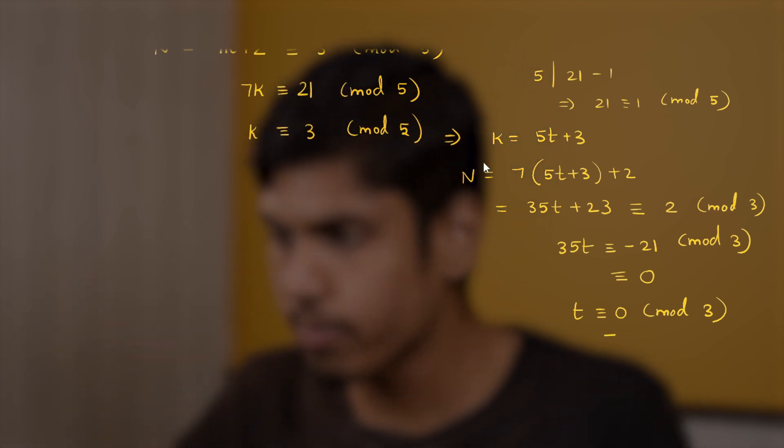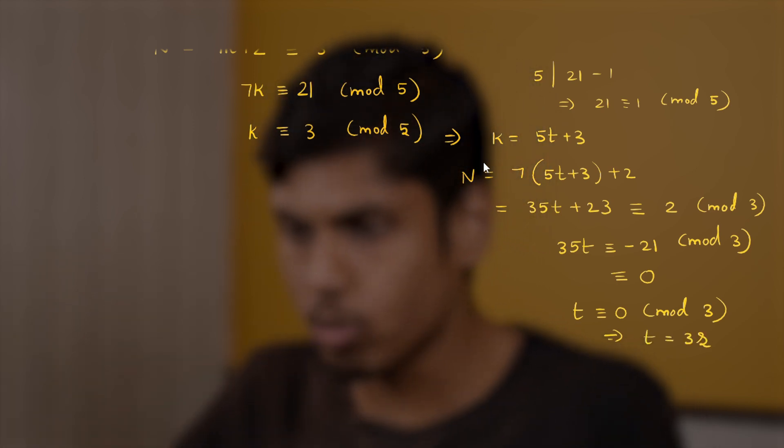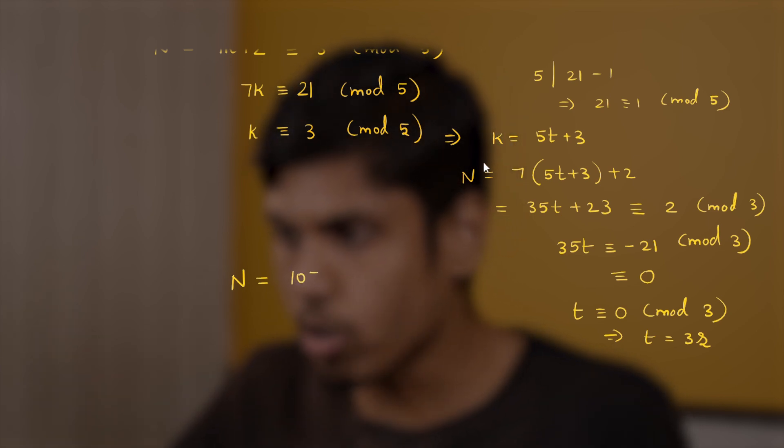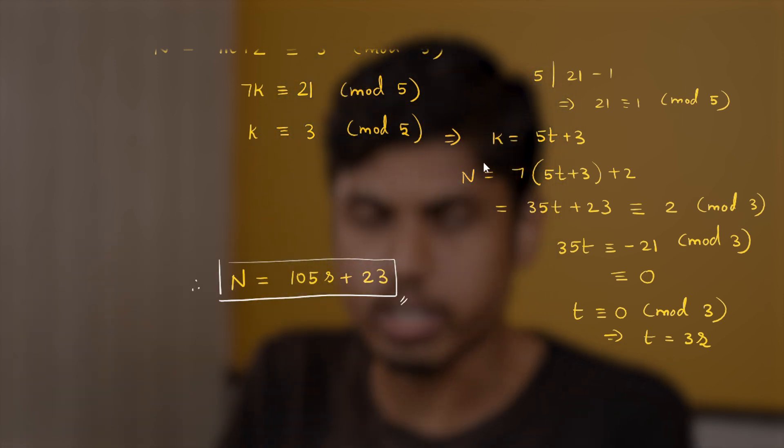So t is congruent to 0 implies t can be written as some 3s. So substituting it back in the original equation of 35t plus 23, we get 105s plus 23, with the same 23. Now we got a solution, n equal to 105s plus 23.